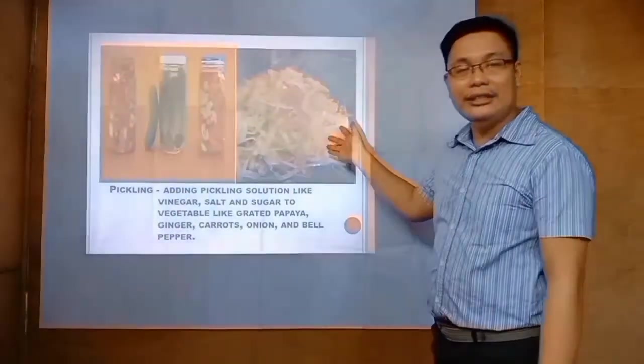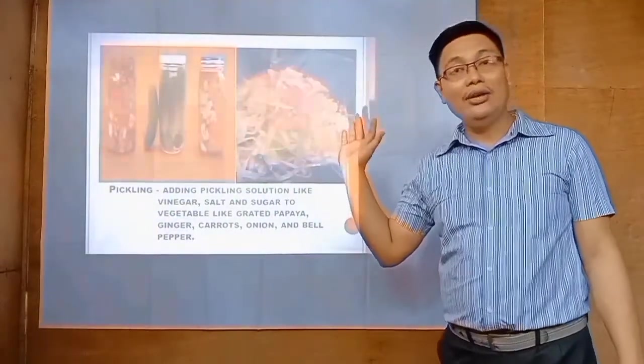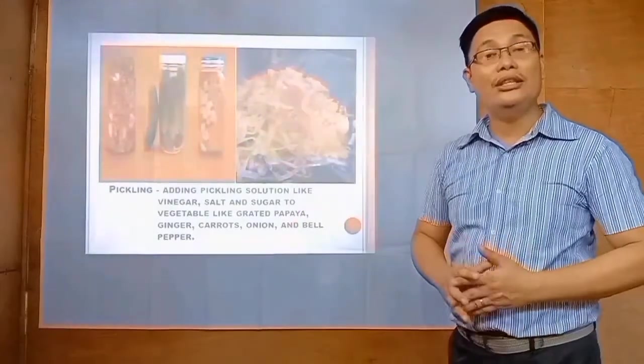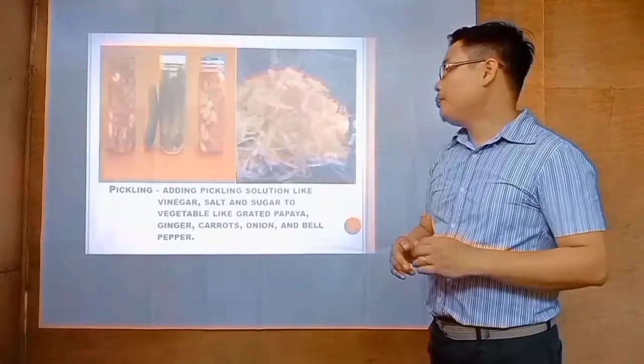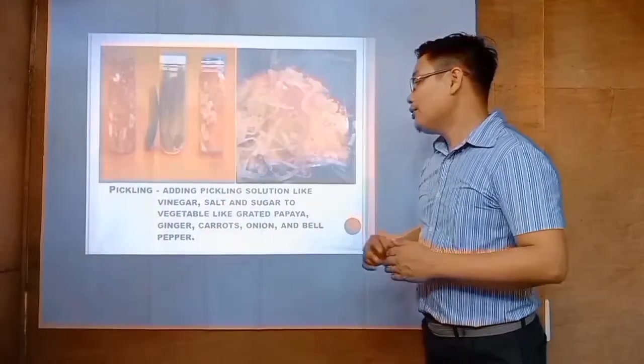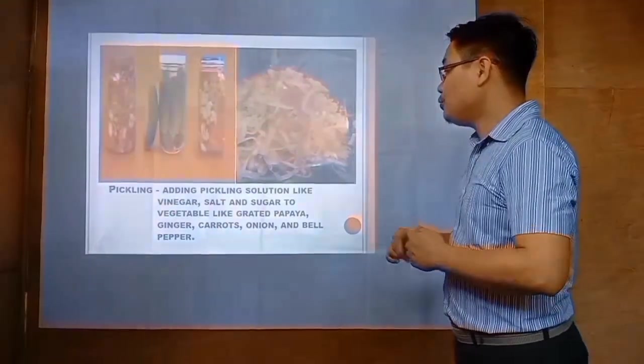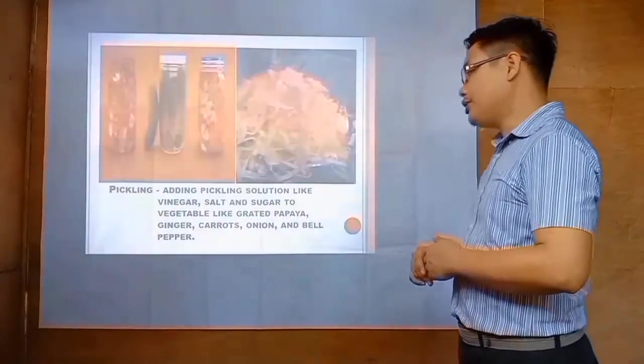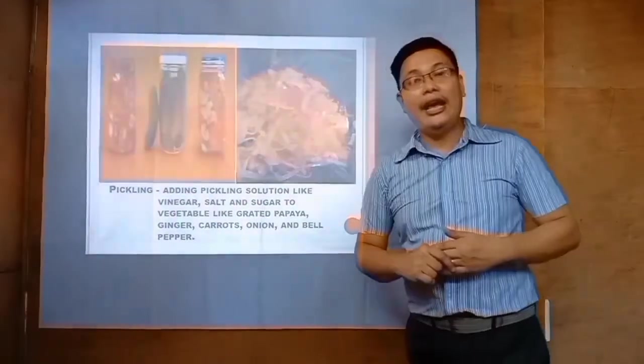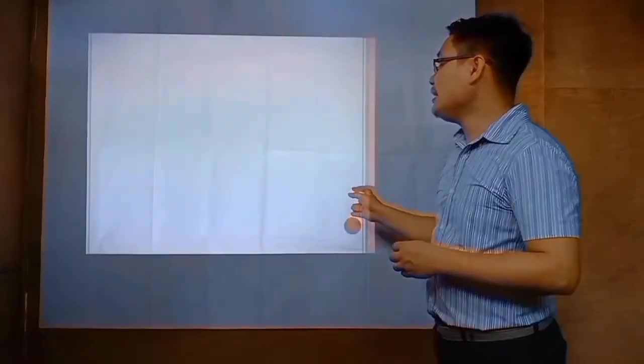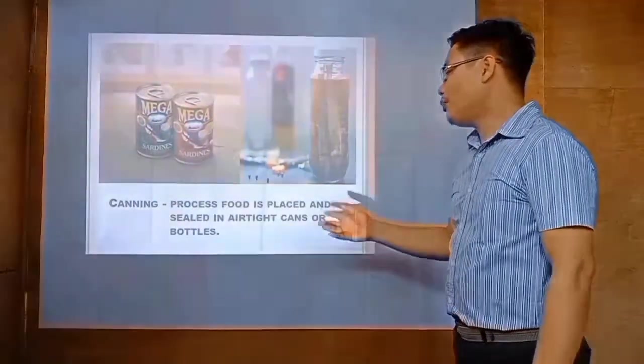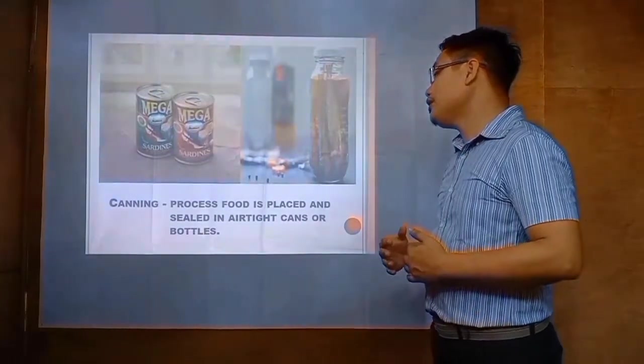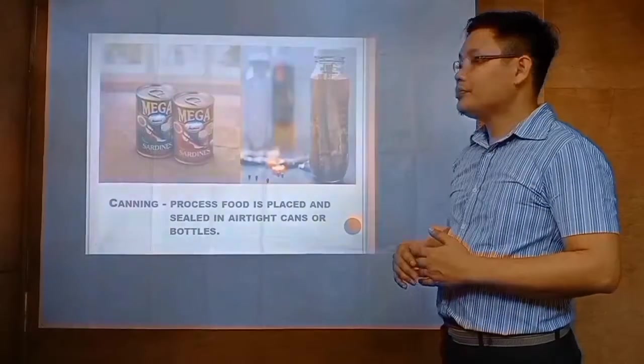Who is familiar with this picture? This is pickling, this is achara. Pickling is adding pickling solution like vinegar, salt and sugar to vegetables like grated papaya, ginger, carrots, onion and bell pepper. The next is canning. We are so familiar with this. The processed fruit is placed in sealed tin cans or bottles.